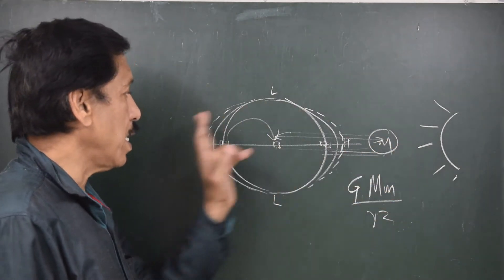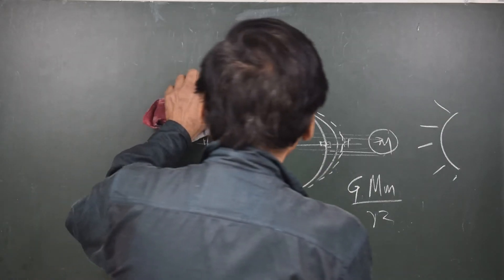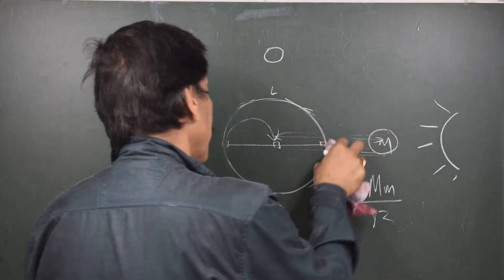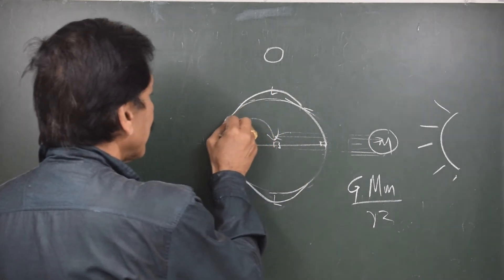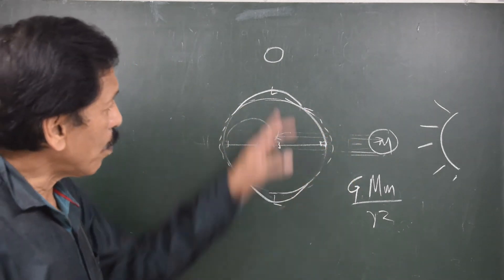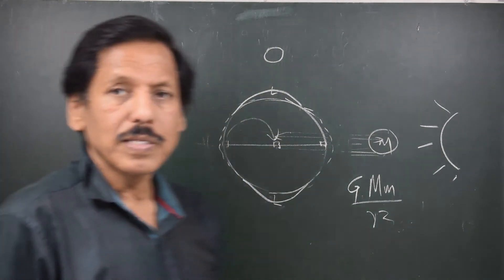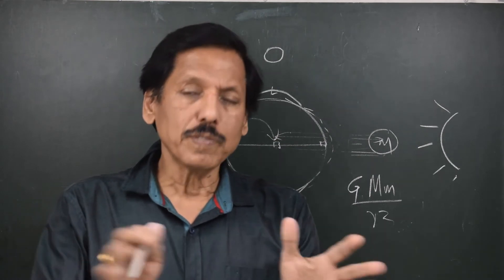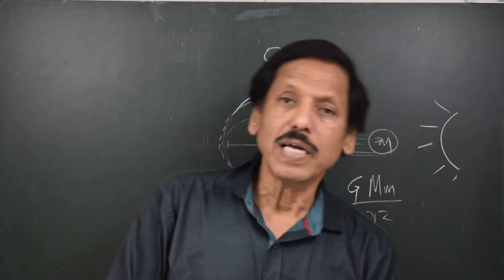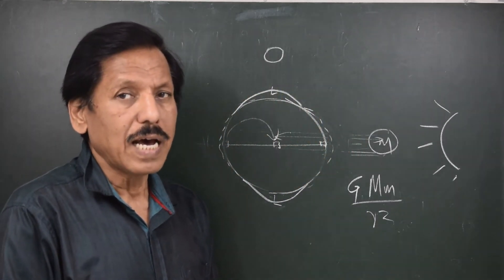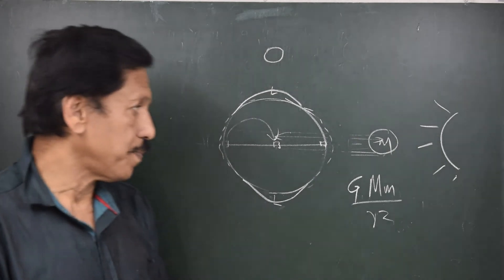Now what happens when the moon is at 90 degrees to the sun? The heap caused by the moon and the heap caused by the sun are 90 degrees apart. Moon wants high water in one direction while sun wants high water in a perpendicular direction — their forces act opposite to each other. This causes high water which is not so high and low water which is not so deep. These are called neap tides, where the high water is not as high as in spring tide and the low water is not as deep.